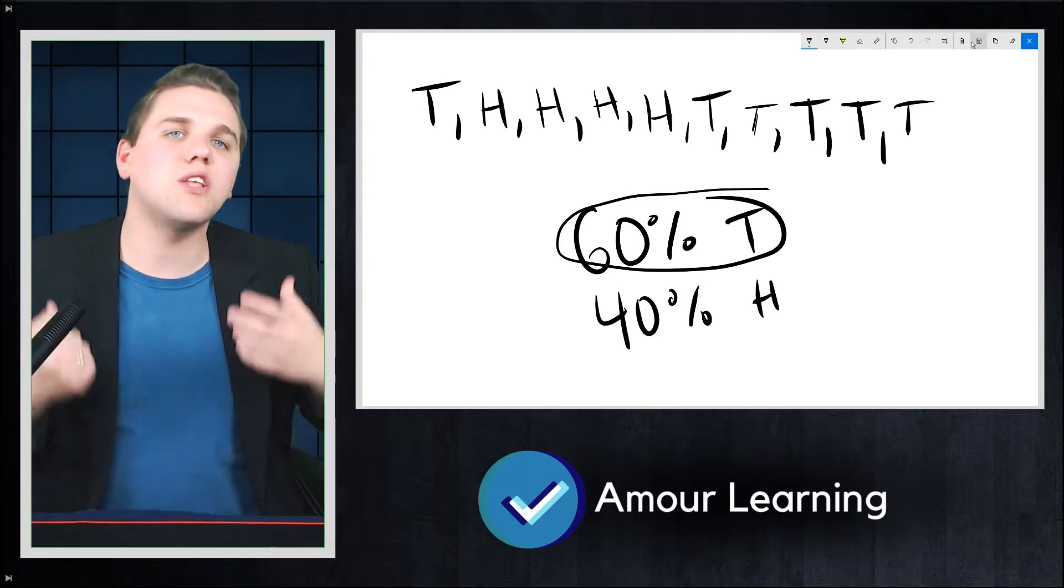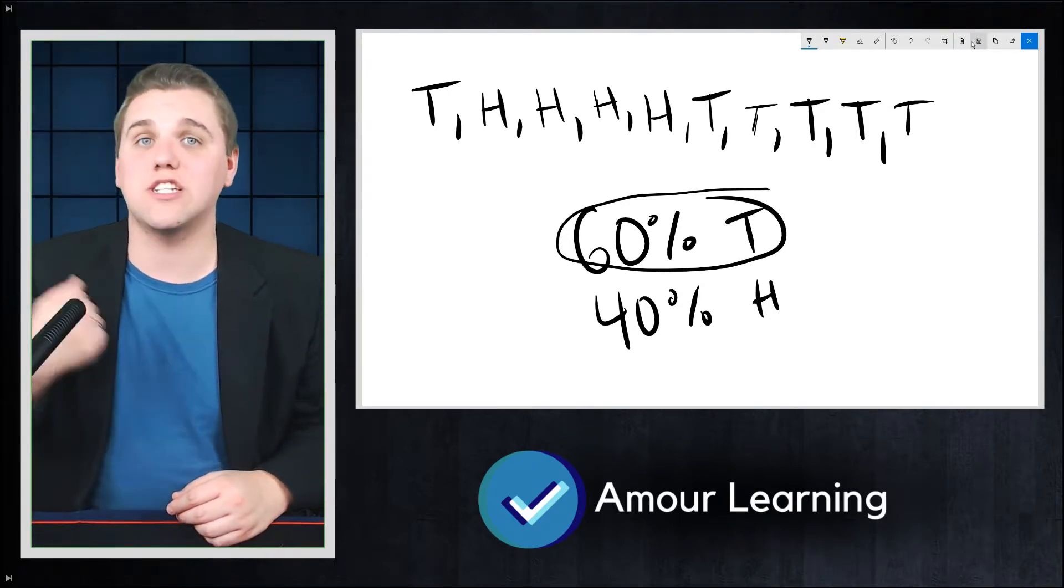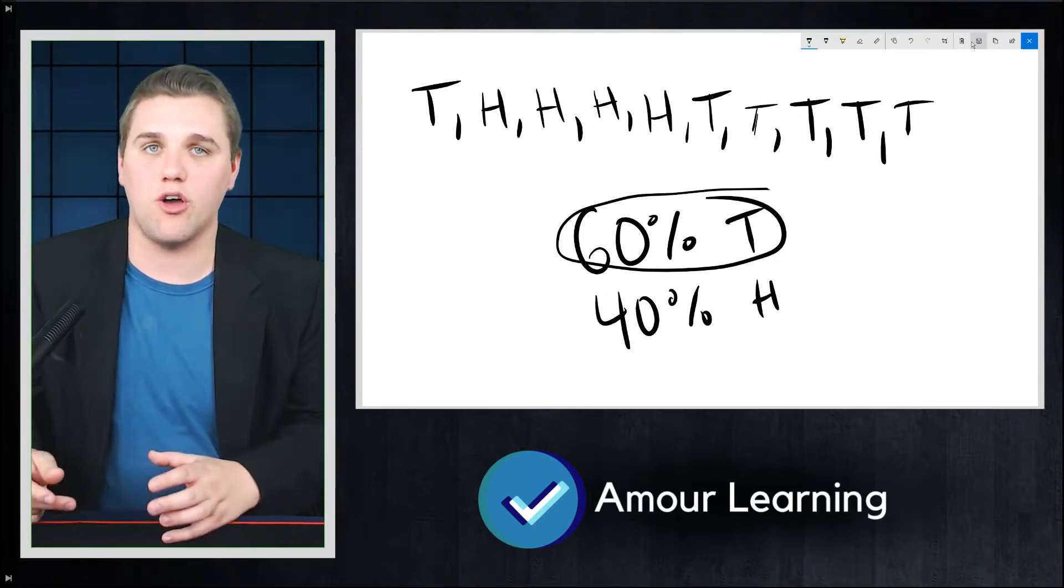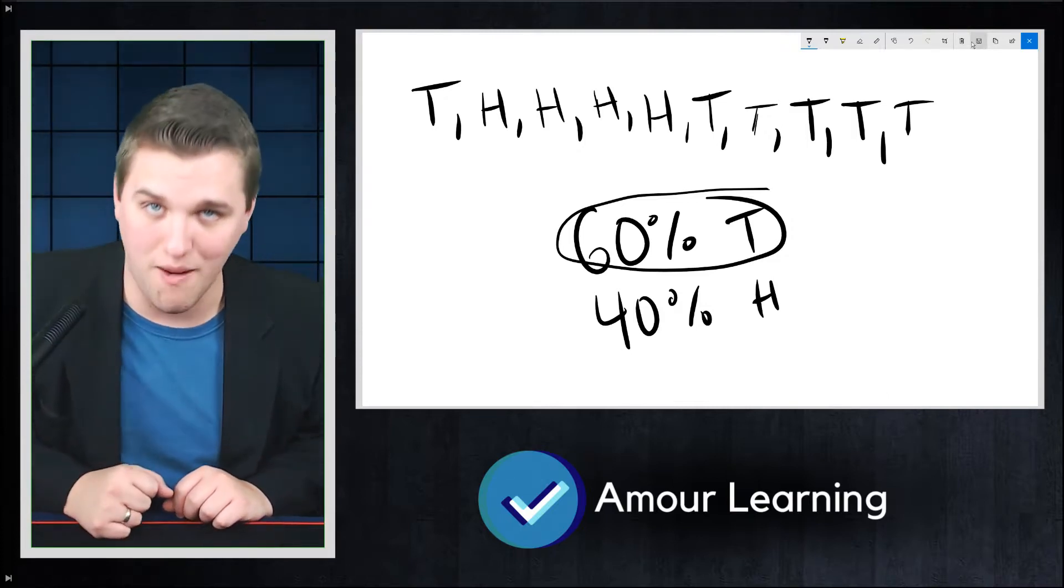And so, that's what the law of large numbers states. That as the number of experiments increases, the relative frequency of a certain outcome will tend closer and closer to the true theoretical probability.